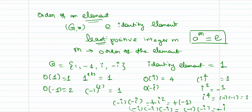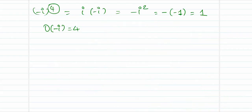The order of an element is the least positive integer. Why is the word 'least' used here? I know i⁴ = 1, but also i⁸ = 1, i¹² = 1, and so on. We are interested in the least power that gives 1, which is 4.